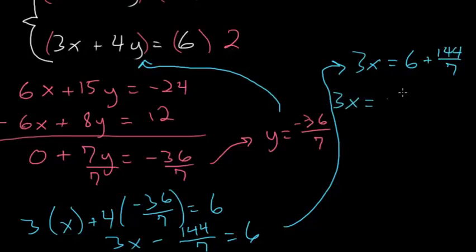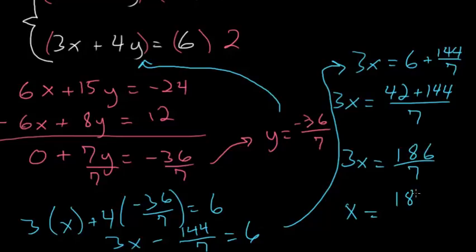On the right hand side we need a common denominator of 7, so everything will be over 7. 6 times 7 is 42 plus 144. So this simplifies to 3x equals 186 divided by 7. And then to solve for x we just need to divide each side by 3. So x equals 186 over 21.